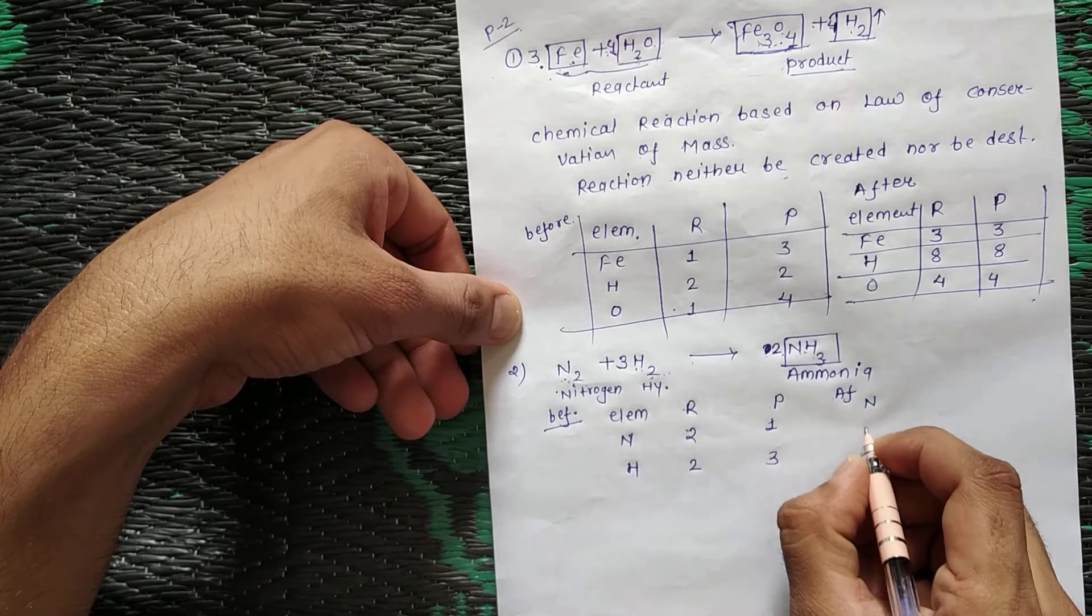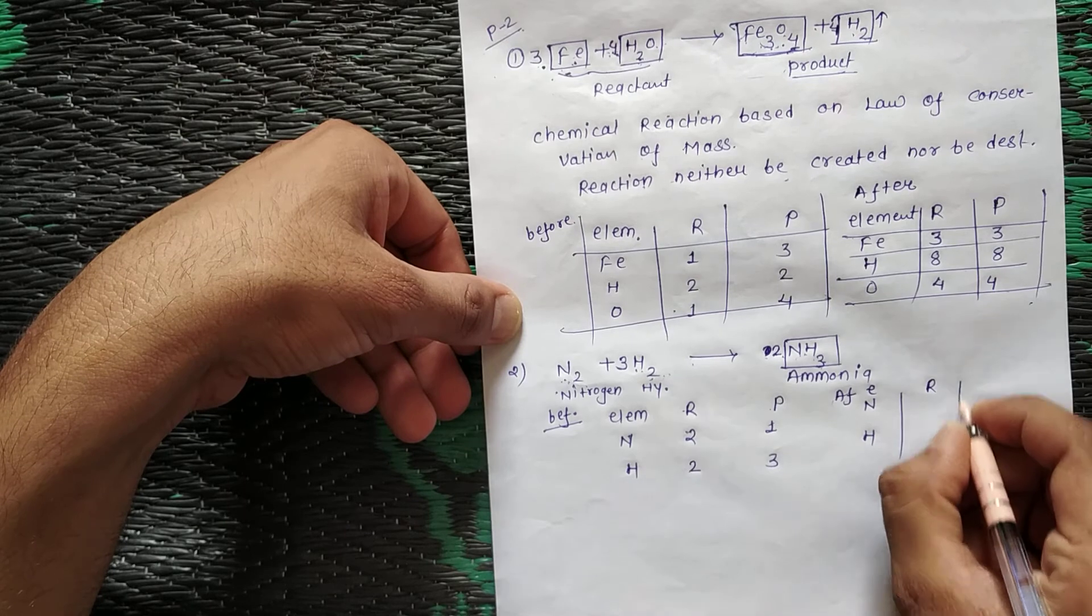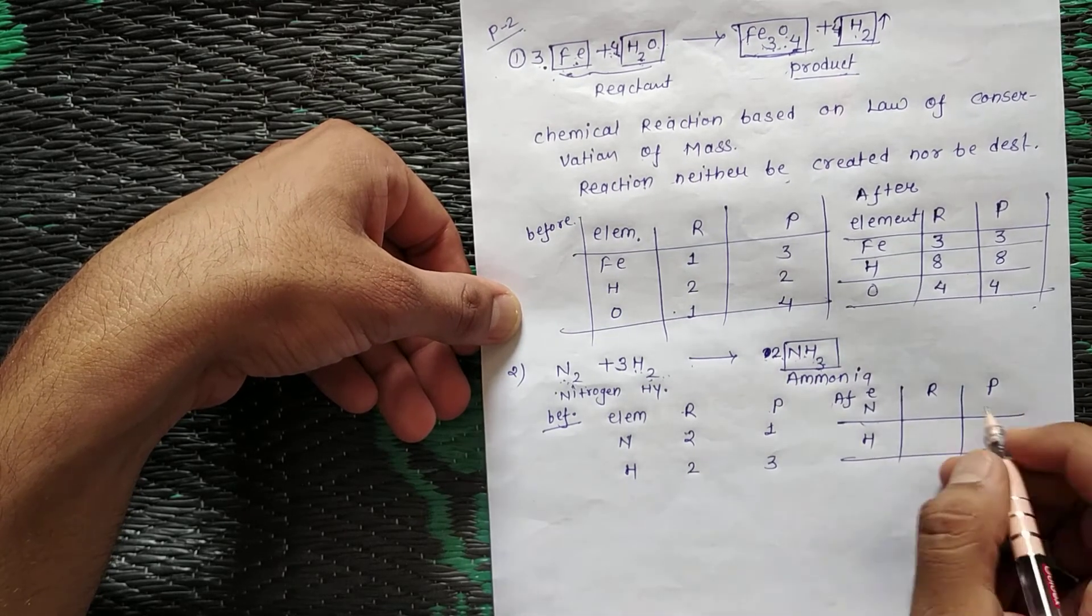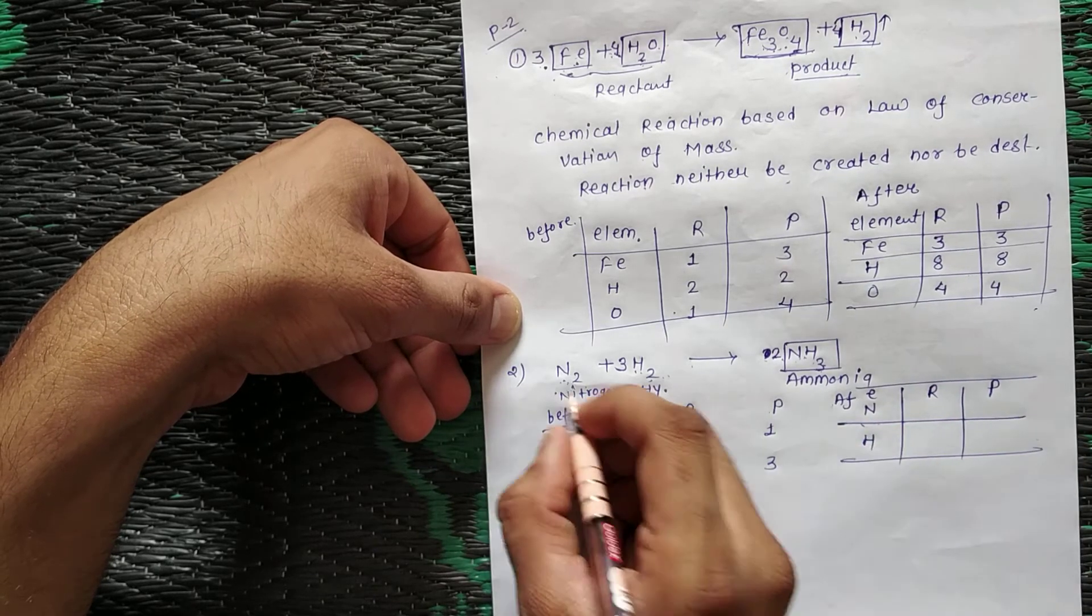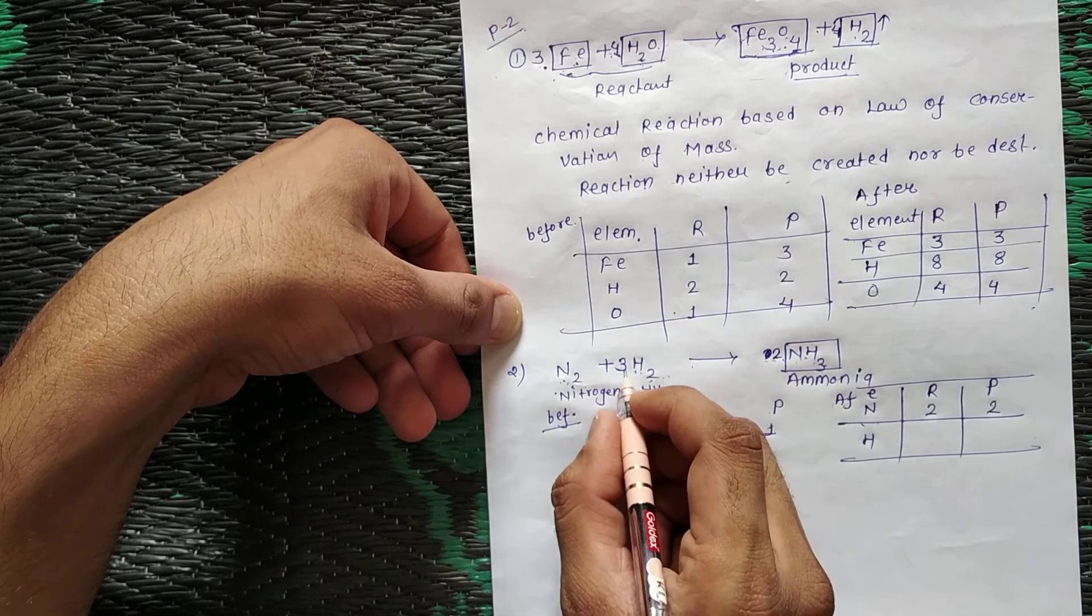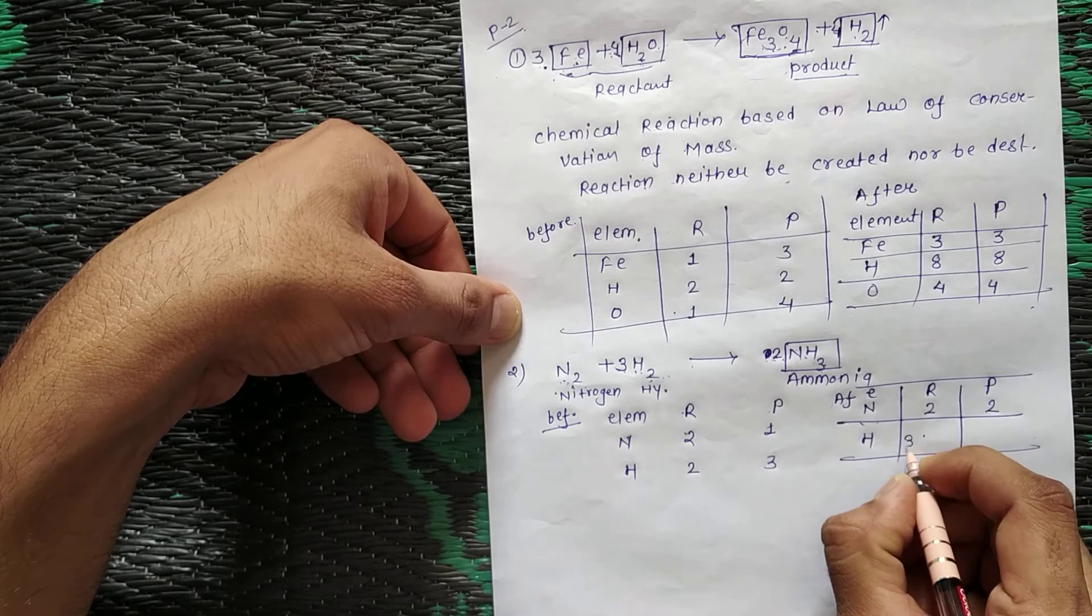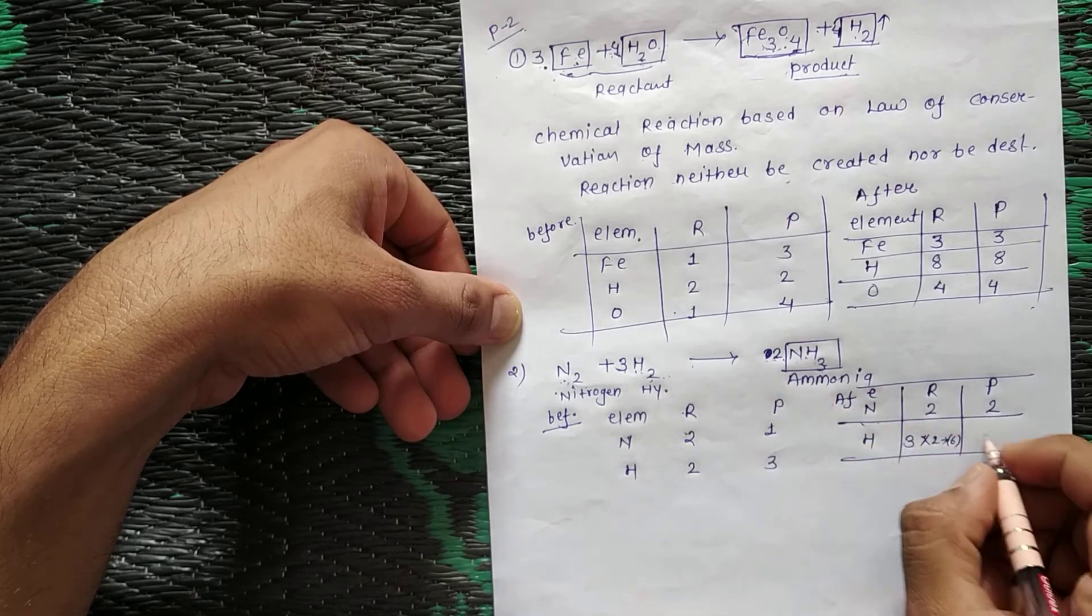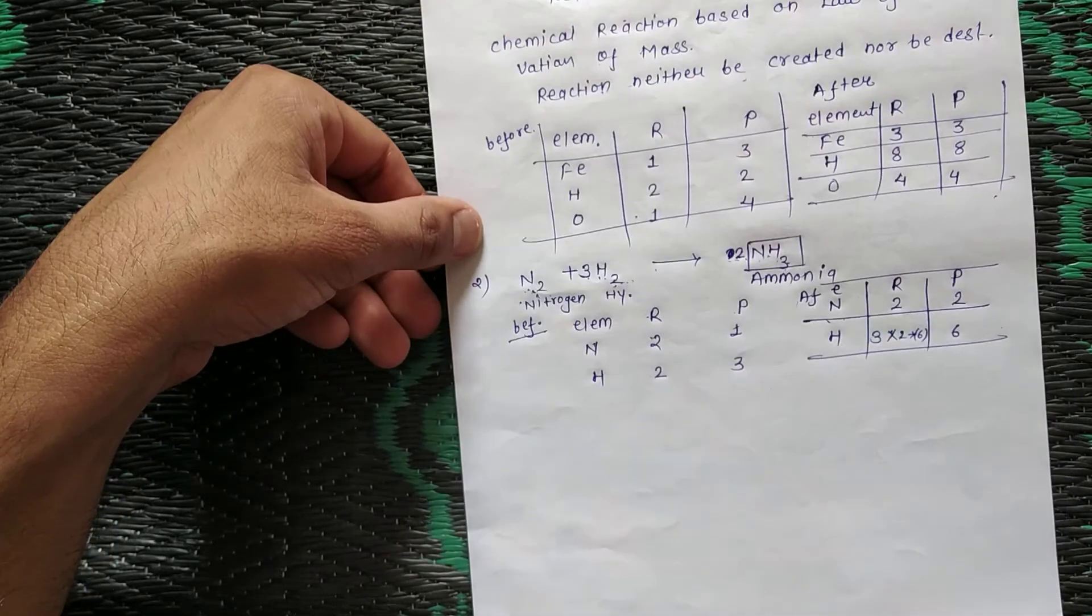Then for hydrogen, 3 times 2 equals 6, so we multiply by 3 here. After the reaction, the changes we made: nitrogen element shows 2 nitrogen forming 2 nitrogen in product. For hydrogen, 3 times 2 equals 6 hydrogen formation. This way the complete chemical reaction is balanced.